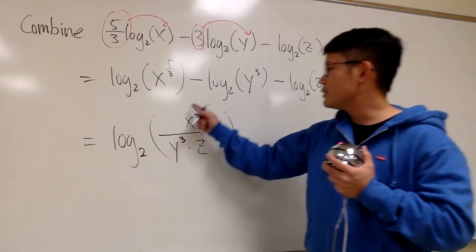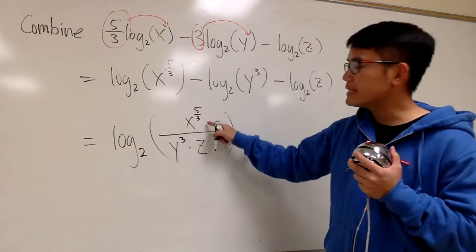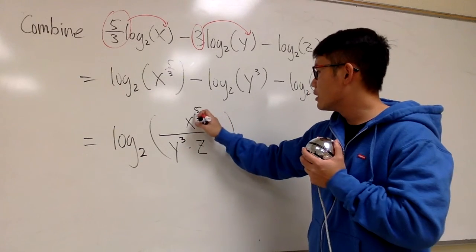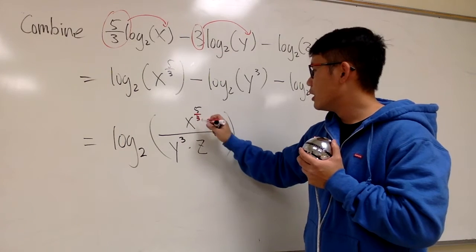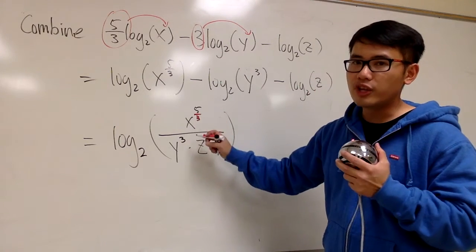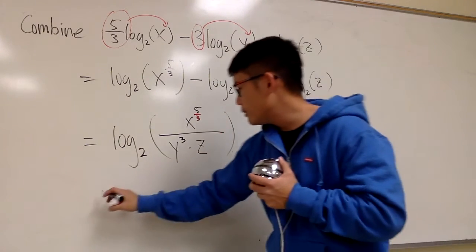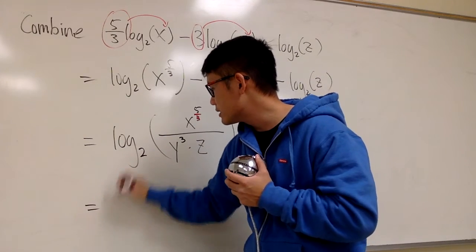This is it. And as usual, whenever you have a fraction for the exponent, remember, the over 3 here will change it to the cube root. So let me write down the final result for you guys.